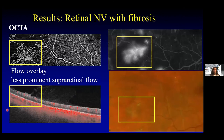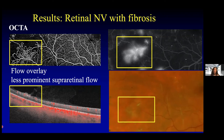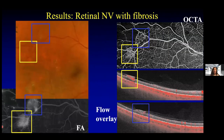One finding we noted was that when eyes had retinal neovascularization associated clinically with fibrosis, there might be less prominent flow overlay and less prominent supraretinal flow. On the bottom right, we see some fibrosis in this eye with retinal neovascularization confirmed by the fluorescein image. Here's the OCTA image, and here is the structural OCT with flow overlay — there's still some flow above the ILM, but it's not as prominent as in the previous cases.